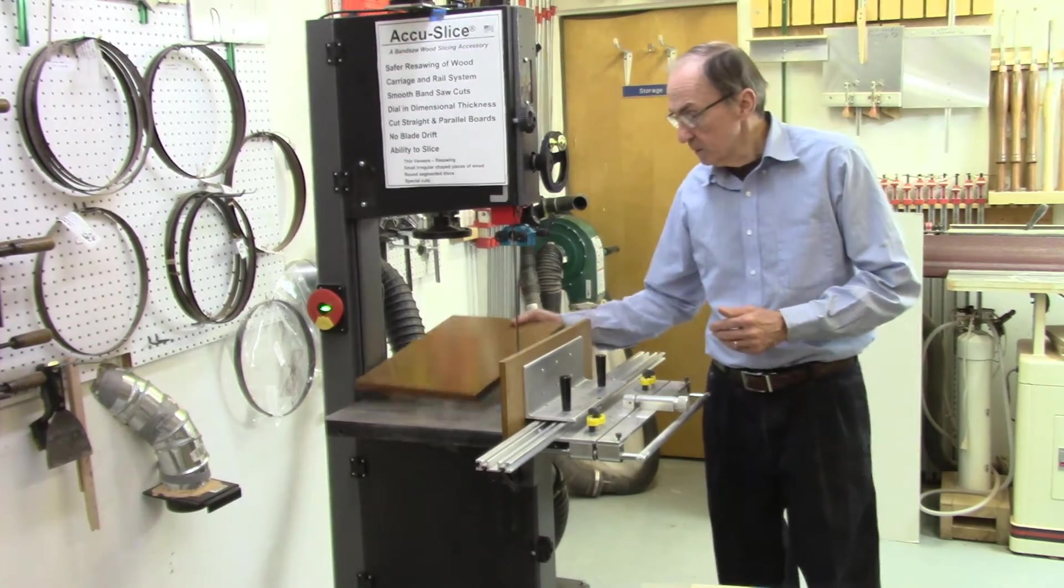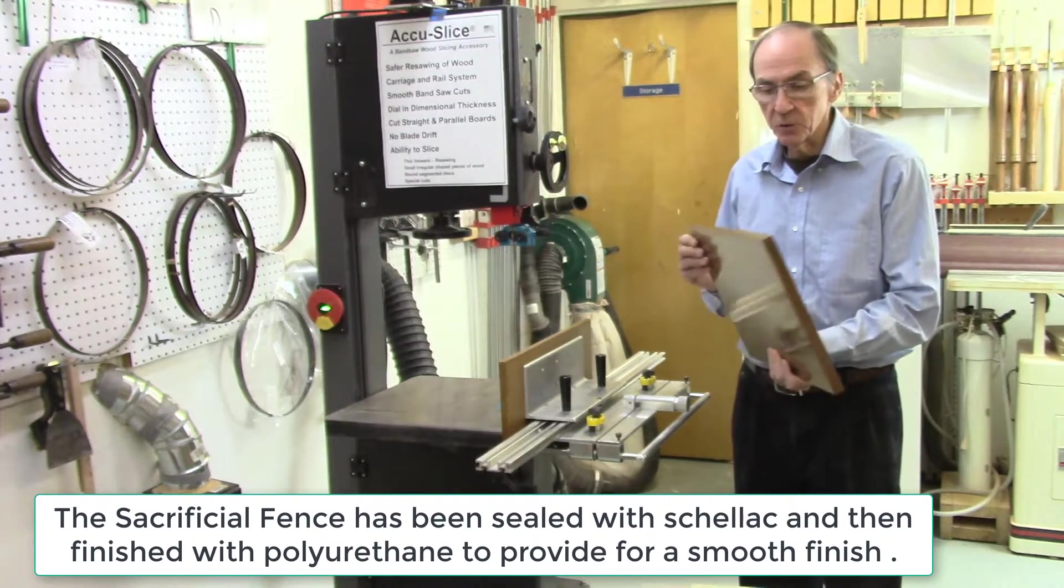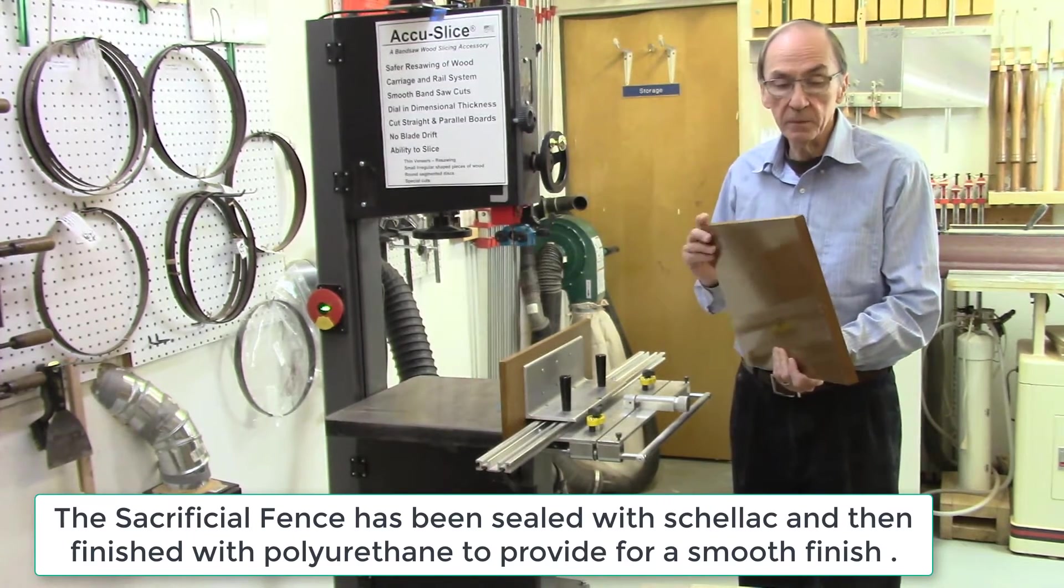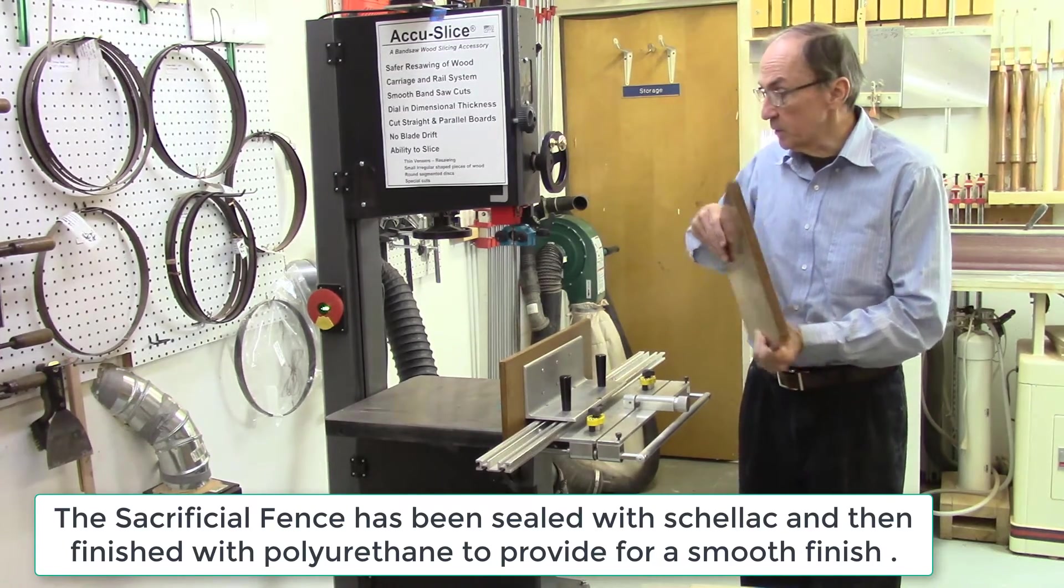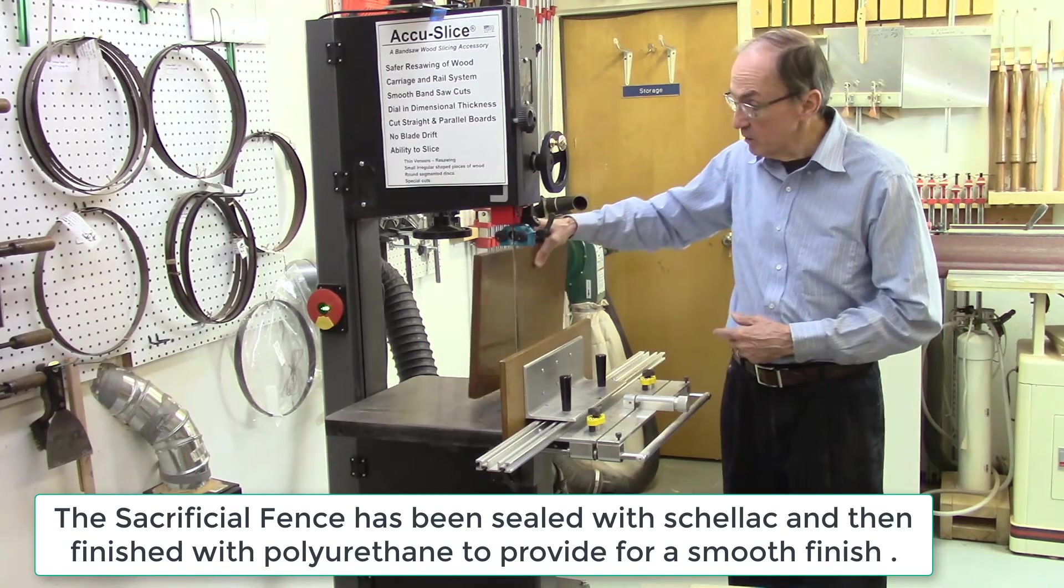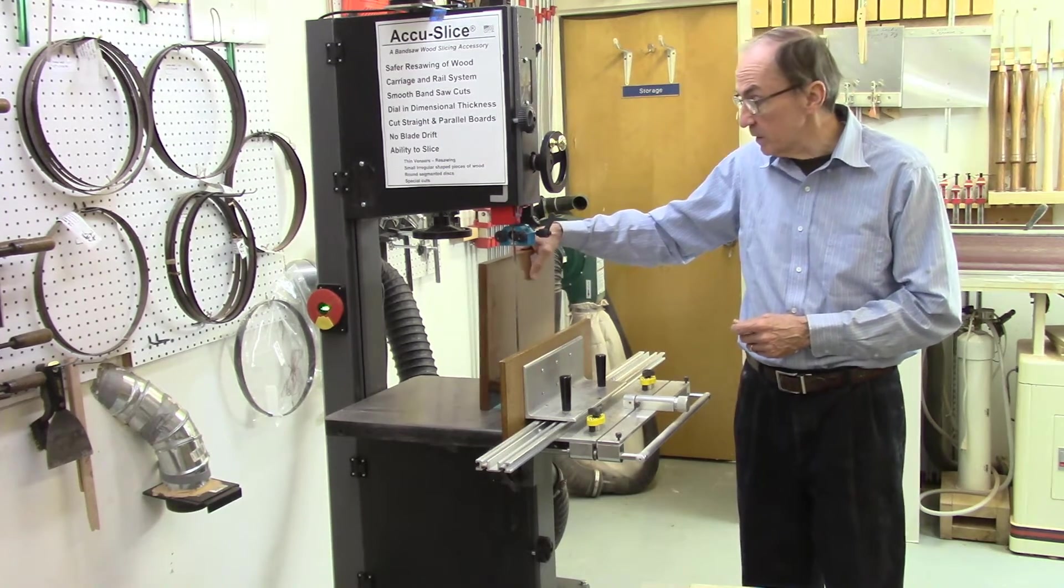This new Sacrificial Fence measures three-quarters inch in width, made from MDF, and is 12 inches high by 16 inches long. This will fit on our existing bandsaw, which has the capacity to cut boards up to 12 inches in height.